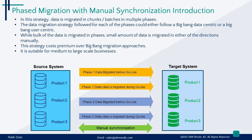While the bulk of the data is migrated in phases, a small amount of data is migrated in either direction manually. This allows business users to continue working in both systems with a small amount of shared data migrated between systems. This strategy costs a premium over Big Bang migration approaches, as the migration solution includes not only migration of data in phases but also bidirectionally. It is suitable for medium- to large-scale businesses that target gradual transformation to avoid business interruption and to have good control over progress.